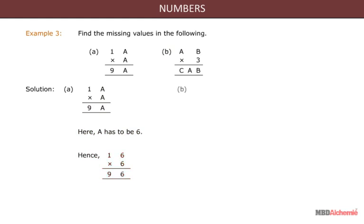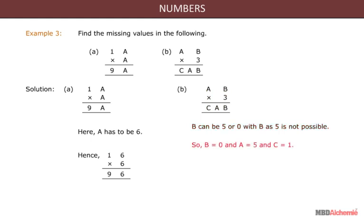Look at the third example: find the missing values where 1a multiplied by a equals 9a, and ab multiplied by 3 equals cab. For 1a multiplied by a equals 9a, a has to be 6, giving 16 multiplied by 6 equals 96. For ab multiplied by 3 equals cab, b can be 5 or 0, but b as 5 is not possible, so b equals 0, a equals 5 and c equals 1. Hence 50 multiplied by 3 equals 150.